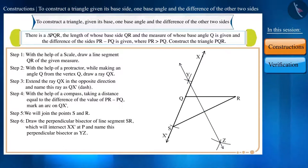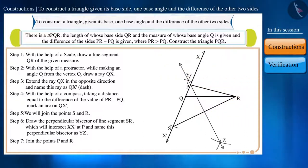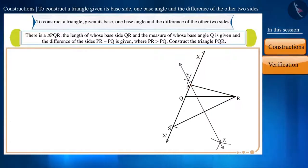You can see that YZ is intersecting line XX dash at point P. Step 7: Now we will join points P and R. And friends, in this way, the formed triangle PQR is the required triangle which we wanted to draw.